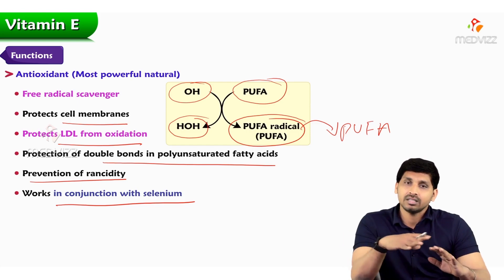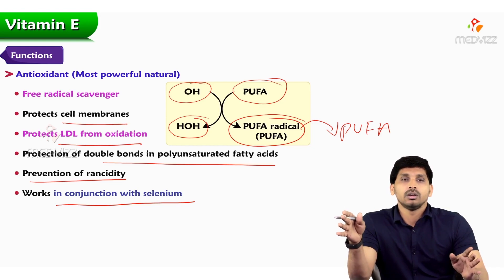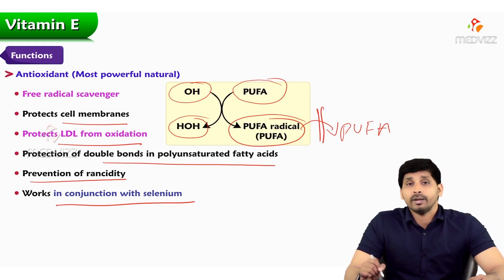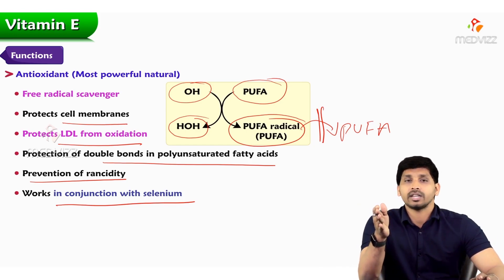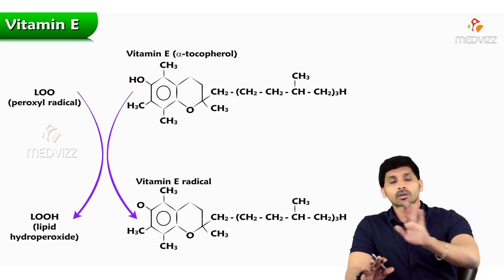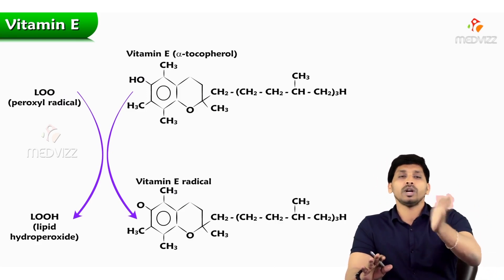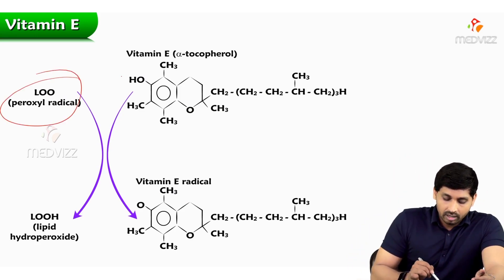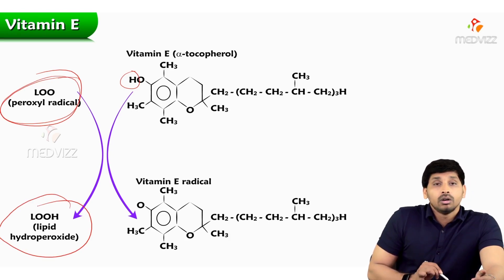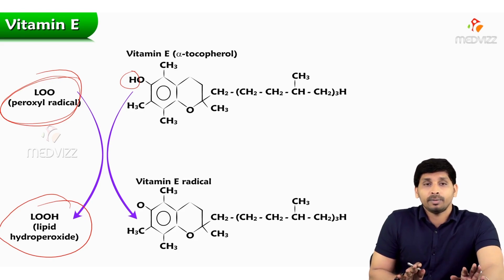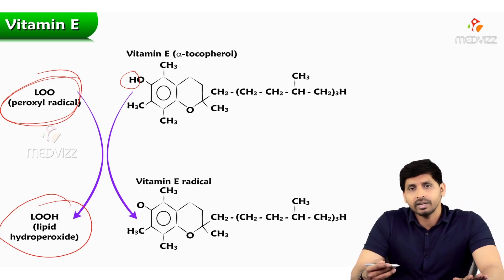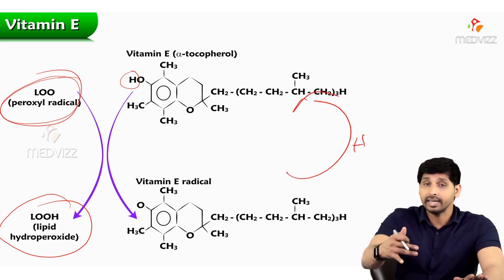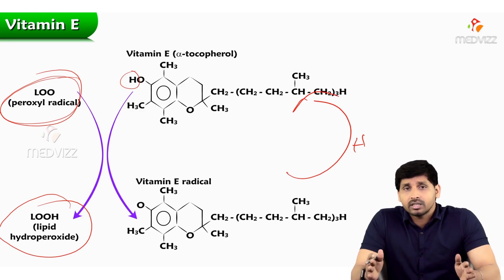A weak cell membrane can be lysed at any time, meaning premature death of the cell. To prevent that, the chain breaker is vitamin E. Vitamin E involves itself in the chain reaction, breaks it, and converts the PUFA radical into normal PUFA. Vitamin E is converted to a vitamin E radical. When vitamin E comes in contact with a peroxide radical, it donates its hydrogen to the lone pair of electron radical and converts it into a lipid hydroperoxide — which is not a free radical and has no harmful effect. The vitamin E radical is then regenerated by accepting hydrogen from other sources. This is how vitamin E breaks the chain of free radical activity.